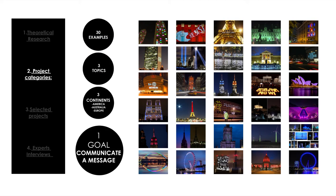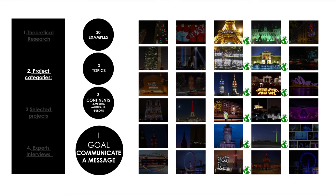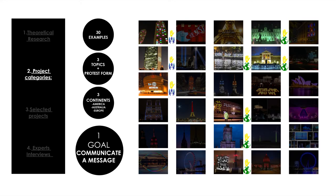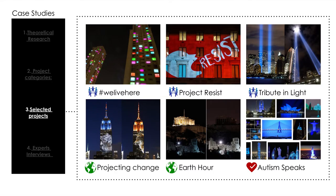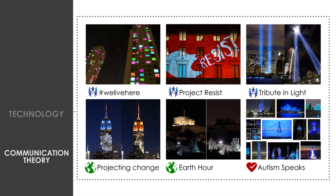Thirty examples were selected and divided into three categories. The first category is about socio-political issues, the next one about environmental and the third one about health issues. Moreover, there is an extra category related to protest action that characterizes the form used for the communication of the message. Some parameters were set in order to select which six projects could be the most beneficial for the research question, regarding the topic, the location, the technology used as well as the communication theory.